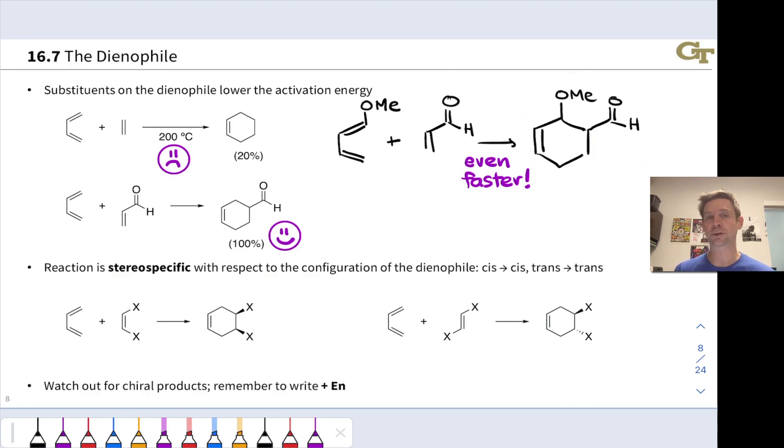So, substituents on the dienophile lower the activation energy and accelerate Diels-Alder reactions. The same is true of the diene and generally what we want to do is polarize the diene and dienophile so that one looks and acts more like a nucleophile and the other looks and acts more like an electrophile.